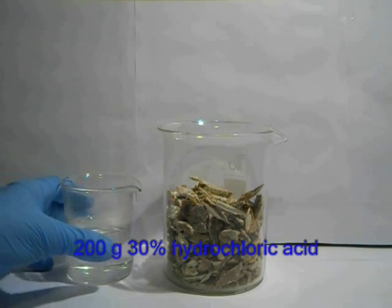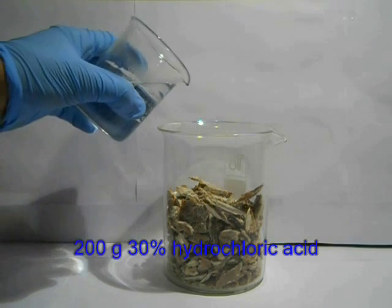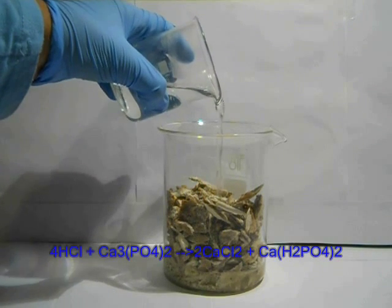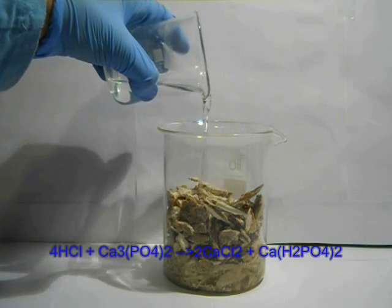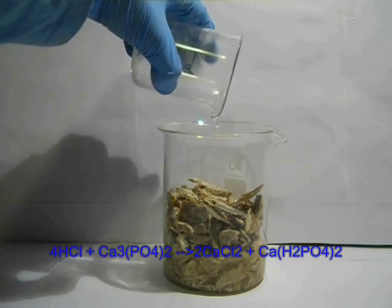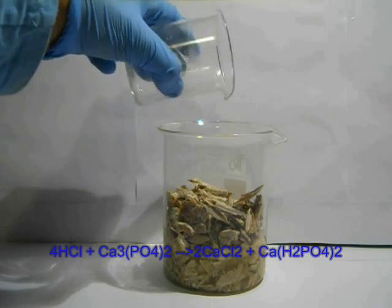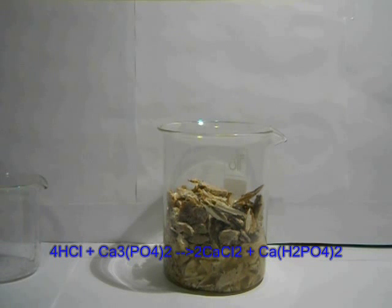Then, add 200 grams of 30% hydrochloric acid carefully and let it rest for about 4-5 days. The reaction occurring is the following: Hydrochloric acid reacts with calcium phosphate to give in solution calcium chloride and calcium hydrogen phosphate.